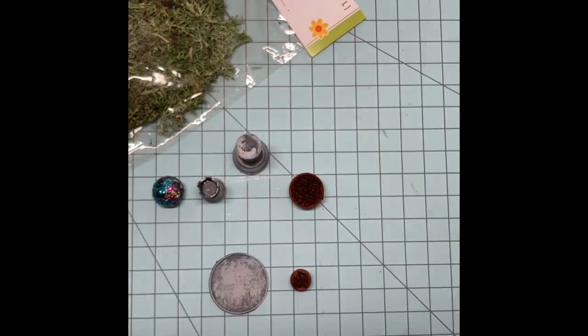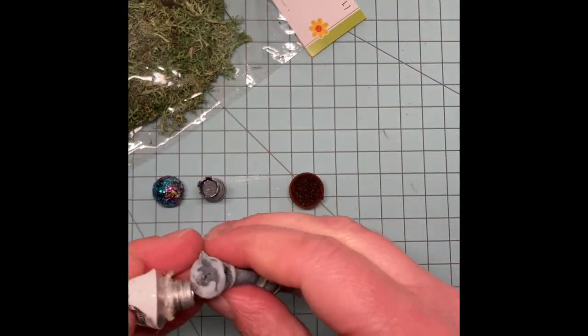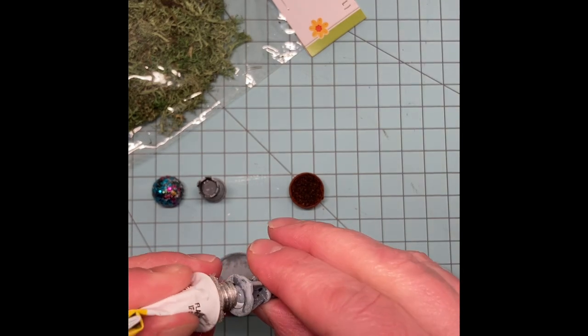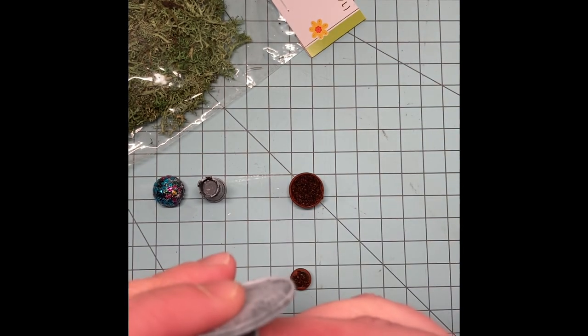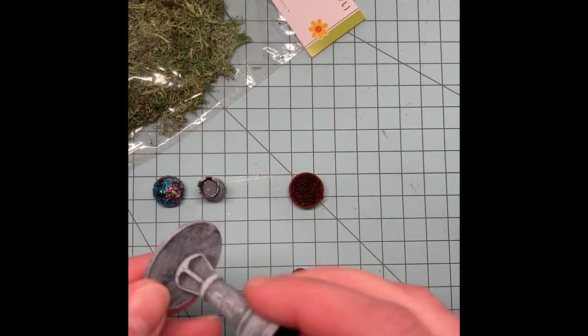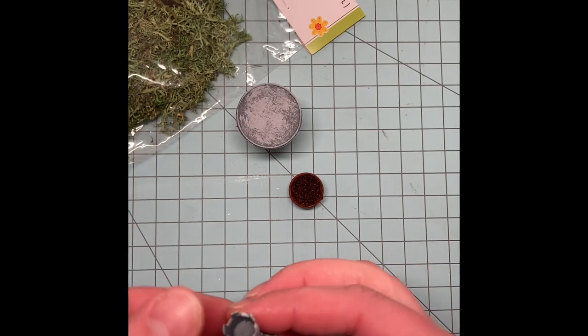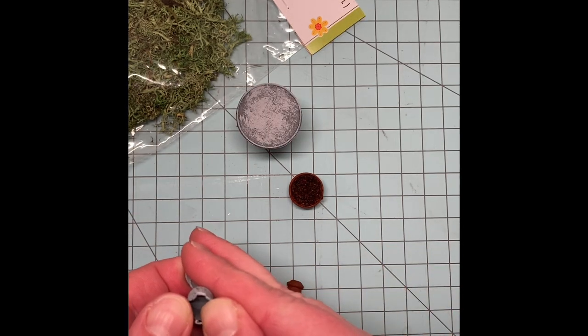When everything was dry, I took my Dollar Tree Fix-All adhesive and I began assembling. The plate goes on top of the king piece and voila, you have yourself a bird bath. Then bend the crenellations of the rook out gently and glue in your marble. Poof, garden gazing globe is complete.